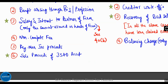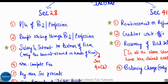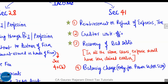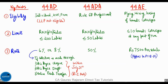Section 41 also taxes a few items. The first one to be taxed under Section 41 is reimbursement or refund of expenses or taxes. The second one is write-off of any creditor amounts owed to you. The third one is recovery of bad debts — the expense should have been allowed earlier for it to be taxed in this year. The fourth one is balancing charge, which is applicable only to power sector straight-line method assessees.